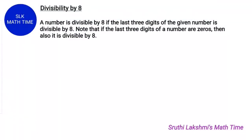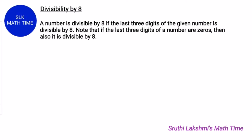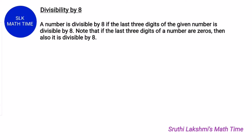Now let's see the divisibility rule for 8. A number is divisible by 8 if the last three digits are divisible by 8. Also remember that if the last three digits are 0s, then it is also divisible by 8. Let's see some examples.